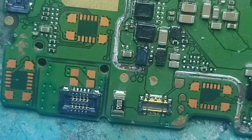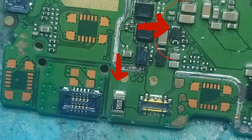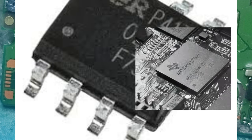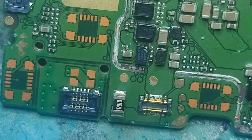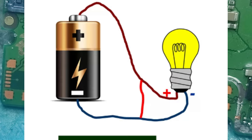On a mobile phone, a short circuit can be found in the capacitors, resistors, diodes, and some other ICs like MOSFETs, processors, and so on. To find it, you should be careful. You have to know that there are many ways to detect a short circuit on a mobile phone's motherboard.